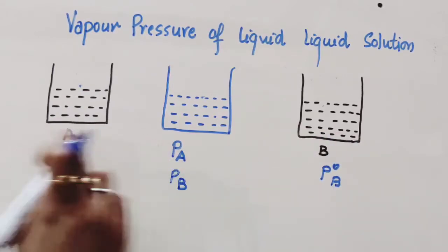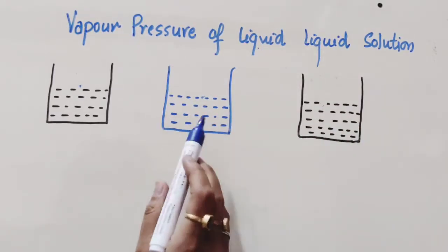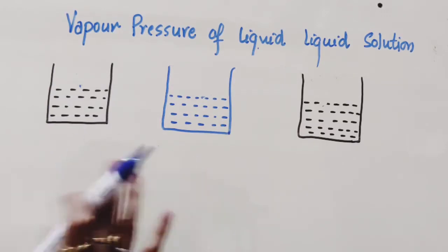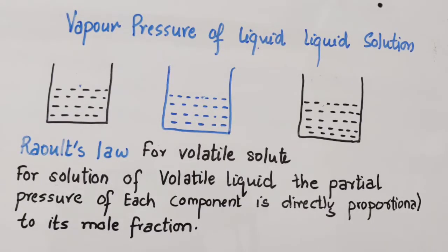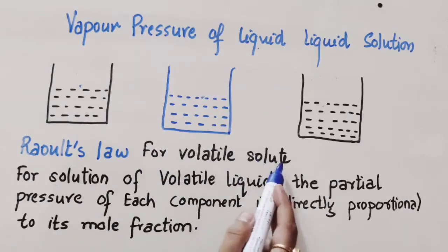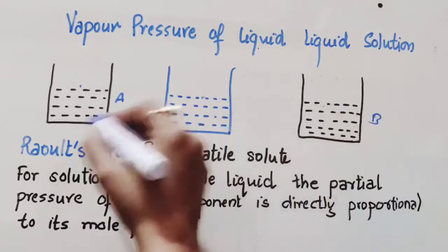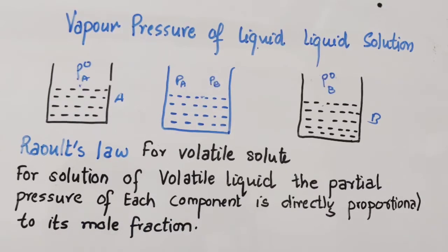This is a mixture and these are the pure components. Now in this liquid-liquid solution, since both are volatile, Raoult, a scientist, has given a law known as Raoult's Law. Raoult's Law for volatile solute: for a solution of volatile liquids, this is a solution of A and B and both are volatile liquids. For a solution of volatile liquids, the partial pressure of each component is directly proportional to its mole fraction.